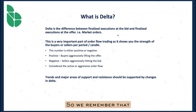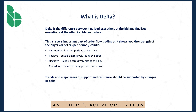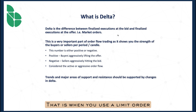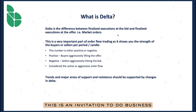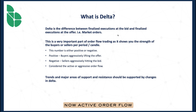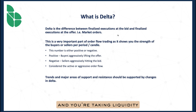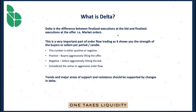So what is Delta? We remember that there are two types of order flow. There's passive order flow and active order flow. Passive order flow is when you use a limit order and you're putting an order on the order book. This is an invitation to do business — an advertisement to either buy or sell. Active or aggressive order flow is when you're reaching across the spread and taking liquidity. So one provides liquidity, one takes liquidity.